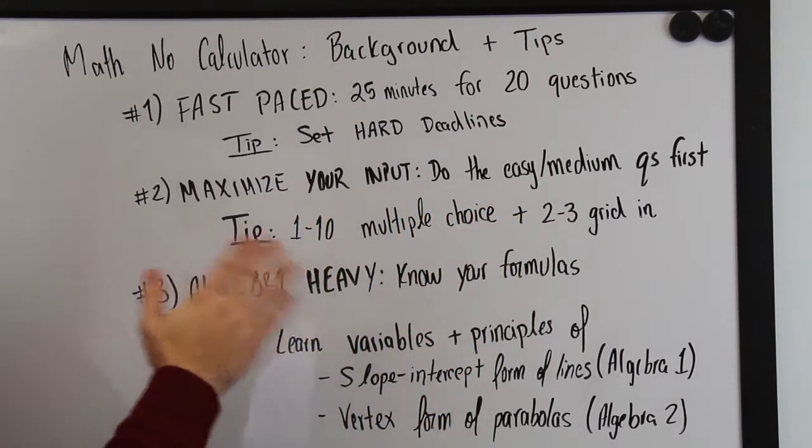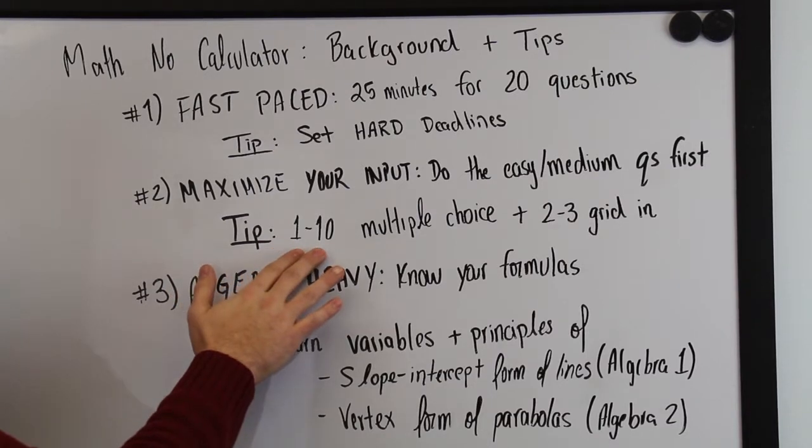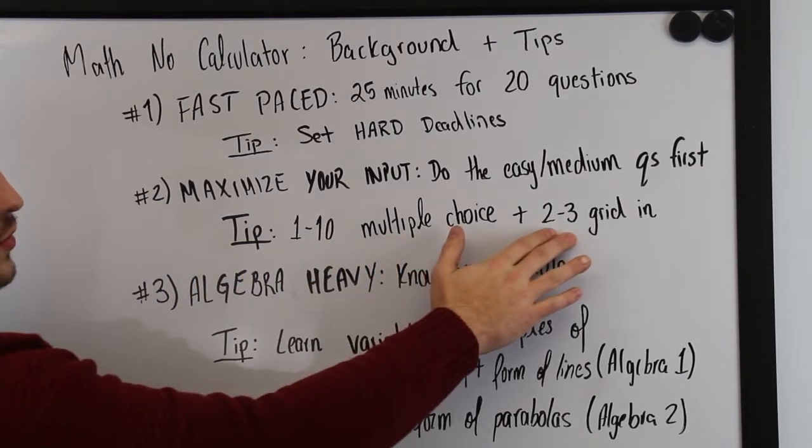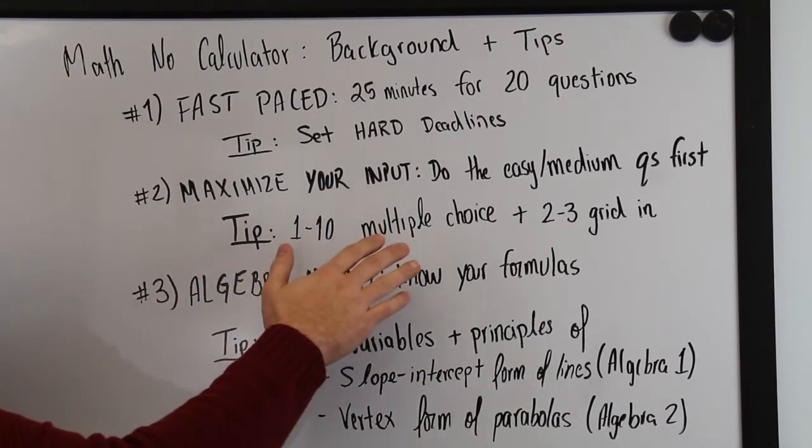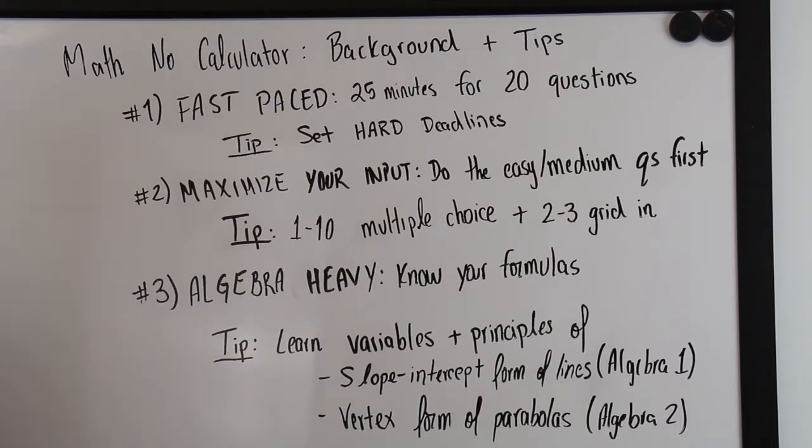So maximizing our input in the first ten questions of the multiple choice and two to three questions in the grid in is going to be the best thing that we can do in this section. How that relates to the hard deadlines: if we're exceeding the 75 second mark in these questions, it's best that we move on to the next one because these are the ones that we're going to want to maximize.